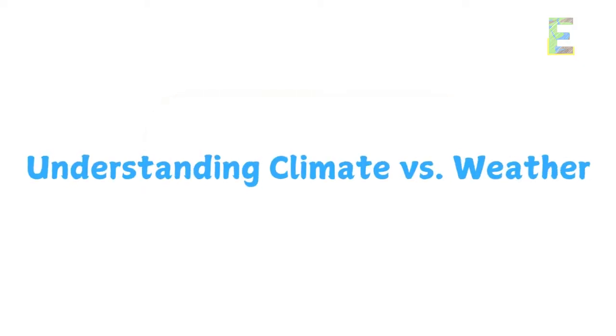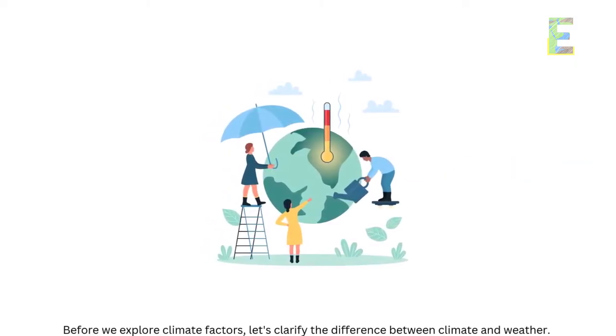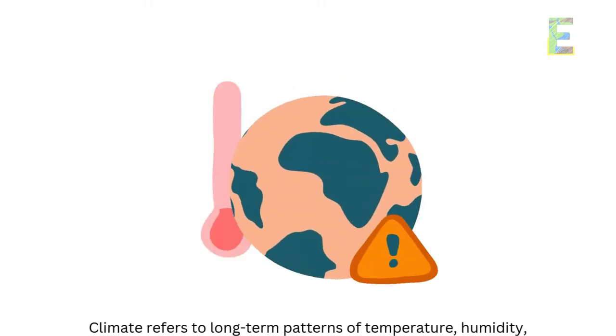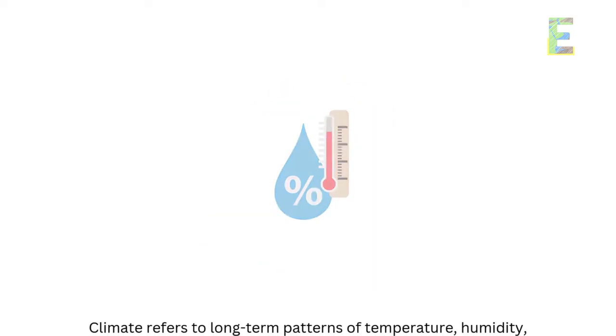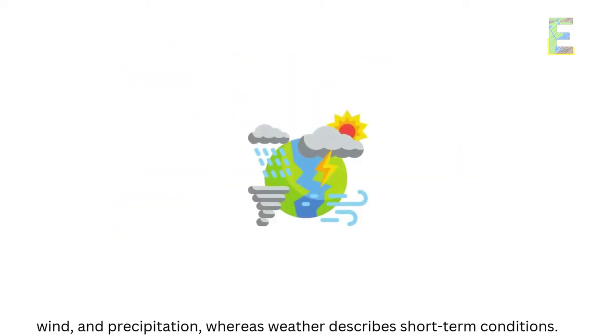Understanding climate versus weather. Before we explore climate factors, let's clarify the difference between climate and weather. Climate refers to long-term patterns of temperature, humidity, wind, and precipitation, whereas weather describes short-term conditions.